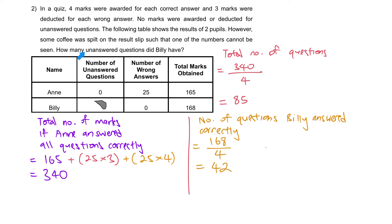In order to figure out the number of unanswered questions Billy had, we know that there are 85 in total. He had no wrong answers and he had 42 correct answers. The remaining questions will be the unanswered questions. So the final step: number of unanswered questions Billy had is equal to 85 minus 42, and that will give you the answer 43.